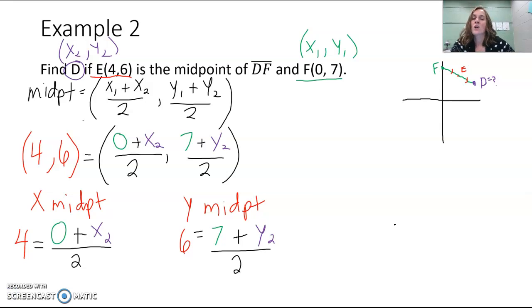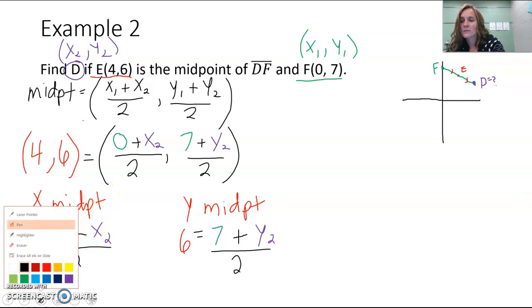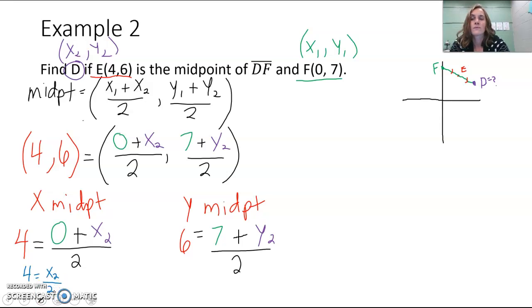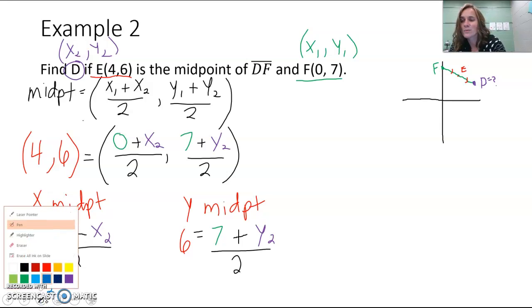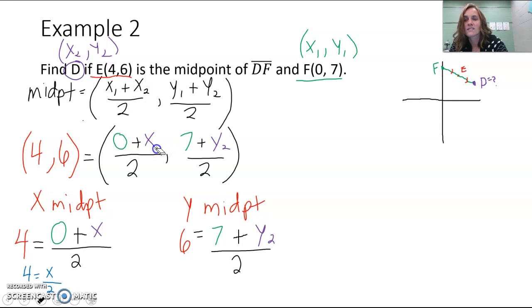And now we can see the two equations that we have to solve. Let's look at one at a time. If we look at our x midpoint equation, we could actually simplify 0 plus x₂ because 0 plus anything doesn't change it at all. So if we do that, we would have 4 equals x₂ divided by 2. Let's just call it x.